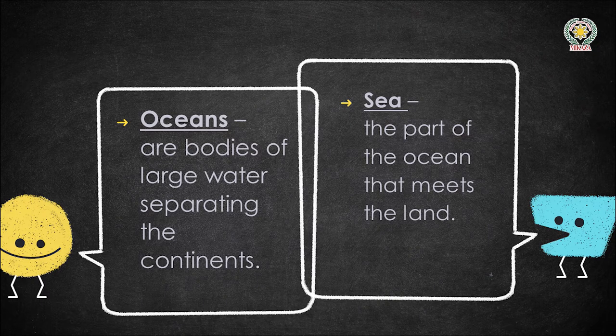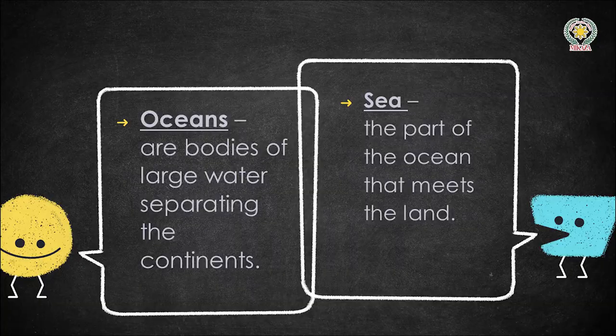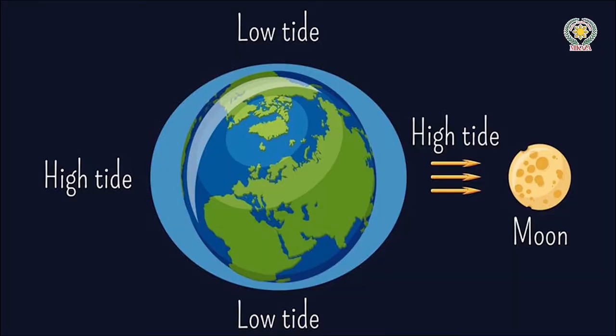The ocean doesn't touch the land — oceans are large bodies of water in the middle — but the part that is touching the land is called the sea. Now I will explain the low tide and the high tide. Look at the position of the moon. The high tide is where it is bulging out. What are the causes of the high tide?